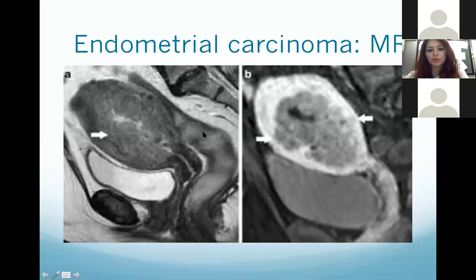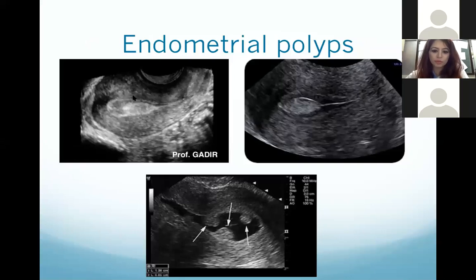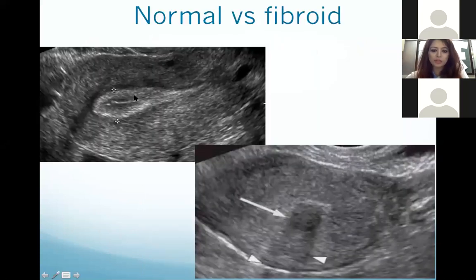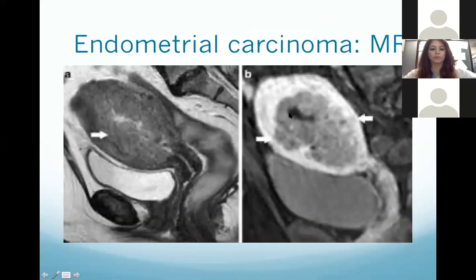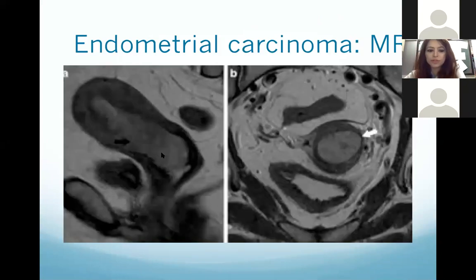This is a case of endometrial carcinoma. You can see a large mass with irregular margins within the endometrial canal infiltrating into the surrounding myometrium. Here you can see the normal endometrium for comparison, and in endometrial carcinoma there is a large bulky mass projecting into the myometrium. This other large bulky mass is infiltrating into the surrounding myometrium as well as into the cervix.